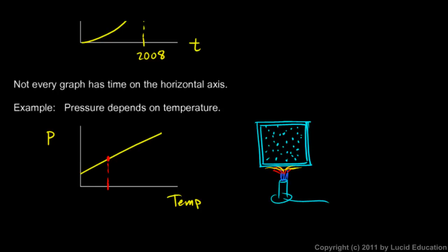The pressure would get greater as the temperature would get greater. So, at a certain temperature, you have a certain pressure. At a higher temperature, this point on the graph corresponds to a higher pressure.